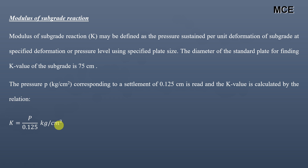To find the modulus of subgrade reaction, we will first draw the load-settlement curve in Excel. From that curve we will find the load corresponding to a mean settlement of 0.125 centimeters, which gives us the pressure at that settlement. After that we will find the modulus of subgrade reaction. Let's move to Excel to draw the load-settlement curve.